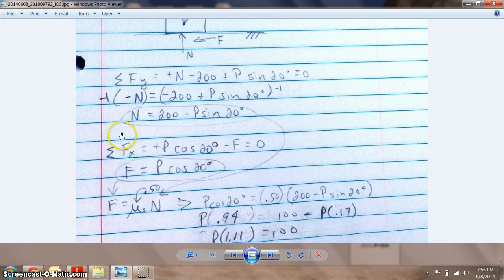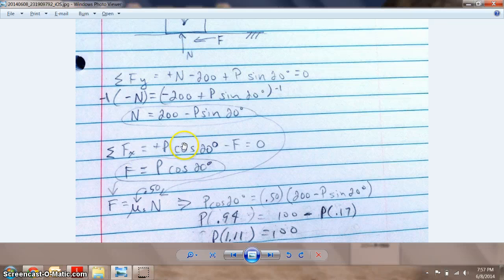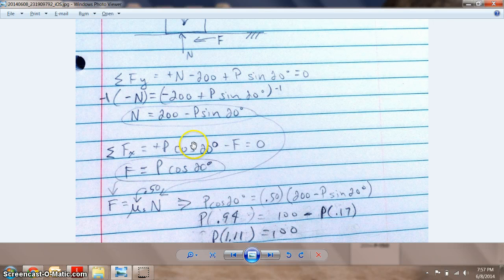Let's solve for X to see if we can get any further. Summation of the forces in the X are another component, so we want the X component of that same load. When you're talking about X components, it's always cosine of 20 degrees, as long as the angle is relative to the X axis. The only other force happening is the friction force going in the other direction, which is always the case.